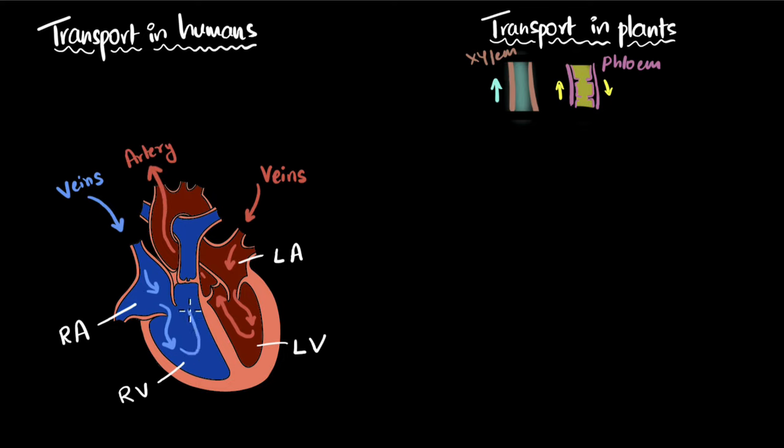Similarly, as the ventricle pushes the blood, the blood always exits the heart through the arteries. Of course you can see there are multiple arteries over here. Now let's complete this whole circuit. From the artery, where does this blood go? Well, this is blue, so I know it's deoxygenated blood. Deoxygenated blood always goes into the lungs to get oxygenated.